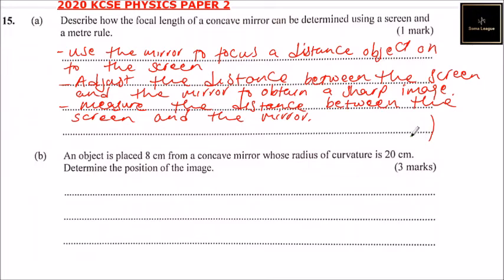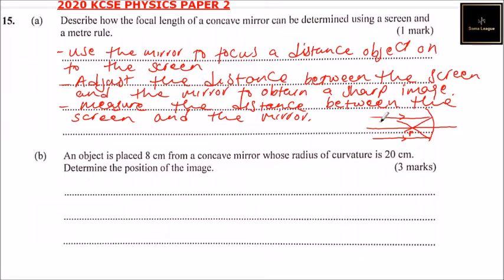You can use a diagram here. We have the principal focus, and we have the rays focusing where the mirror is — that is where the image will be formed. So this is an object at a distance away from the mirror; you focus it onto the screen. That's how you answer part b.